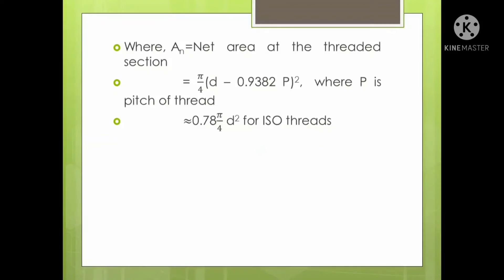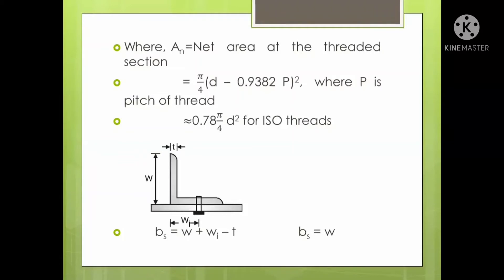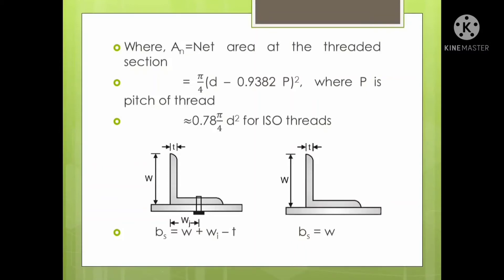This covers the net area for normal bolts and threaded rods. BS is defined as the width of the outstanding leg plus W_i minus T, where W_i is the distance from the center of the bolt to one side of the leg, and T is the thickness. When there is no bolting, BS equals W. When bolts are connected, only the distance up to the center of the bolt is considered.